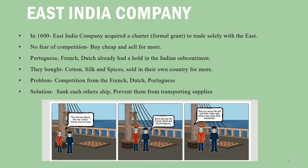The mercantile companies worked like this: they bought goods at a cheaper rate in India and then sold them for a higher price in Britain.